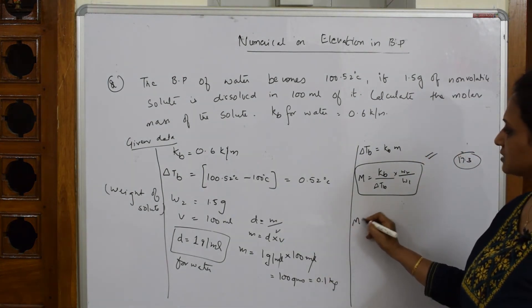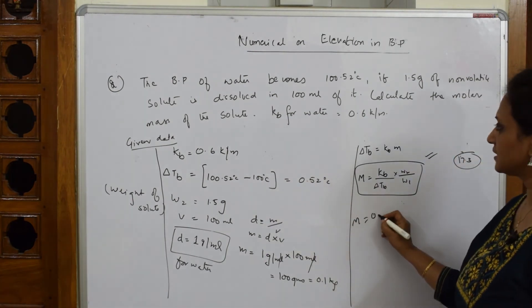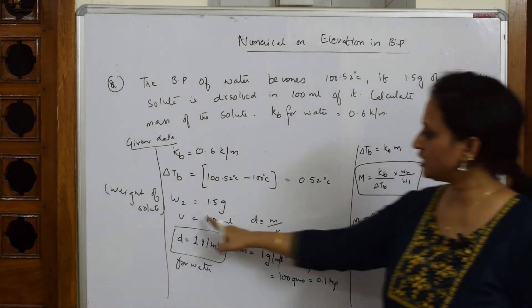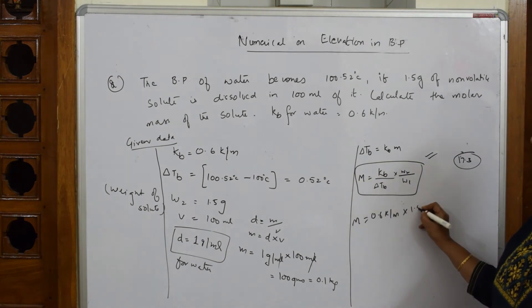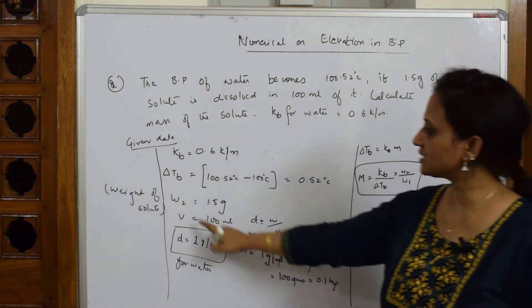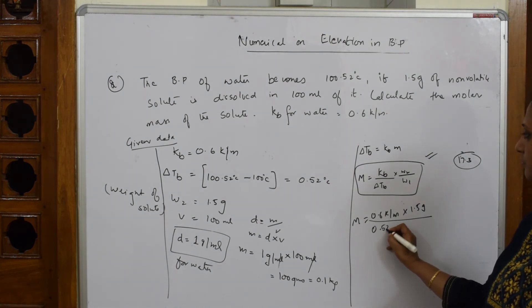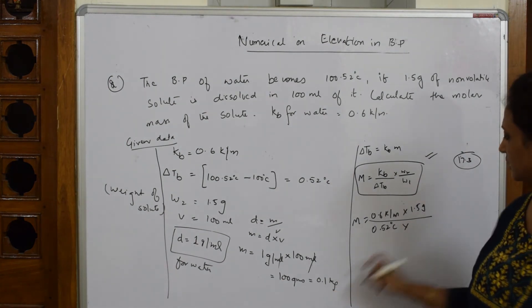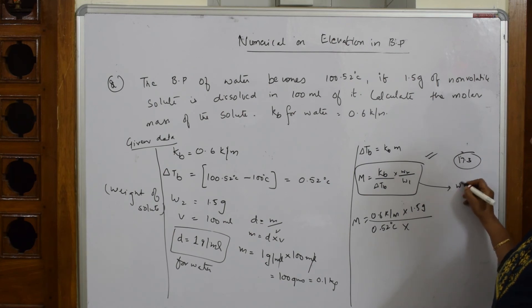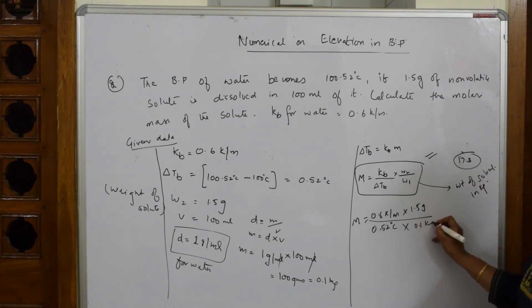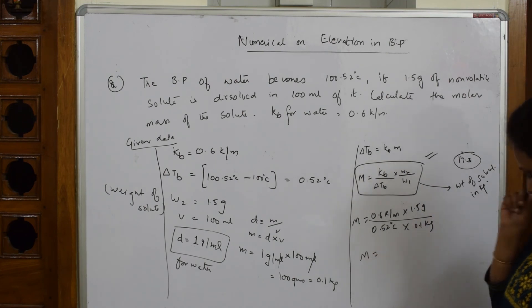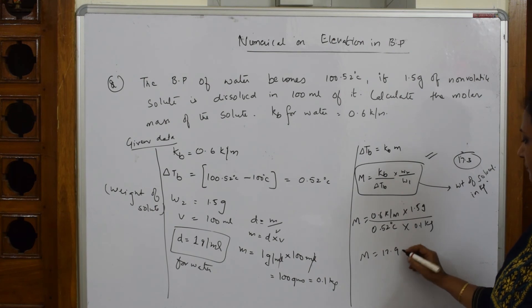Now substitute. M is equal to KB, it is 0.6 K by M. W2, weight of the solute, 1.5 grams. Delta TB, what is delta TB given to us? We have got 0.52 into this. W1, weight of solvent always should be in kg. Remember this, convert the weight of solvent in kg only. I have already got 0.1 kg. So when I solve this, I am going to get an answer of 17.9 gram per mol. This is your answer.